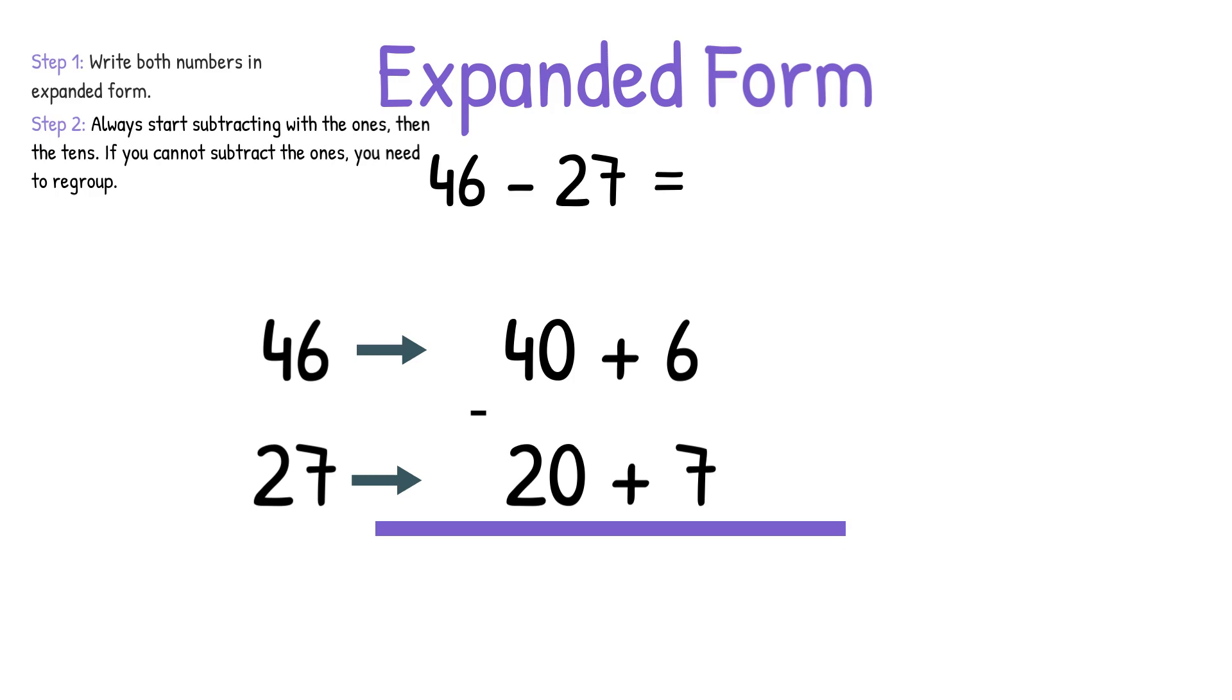In this equation we have to take away seven 1s from six 1s, and we cannot do that, so we're going to have to regroup. The way you regroup in expanded form is you're going to cross out the value of the 10s, so 40 will become 30, because you're going to take one 10 and trade it for 10 1s. So then the 10 gets added to the six 1s, and 6 becomes 16.